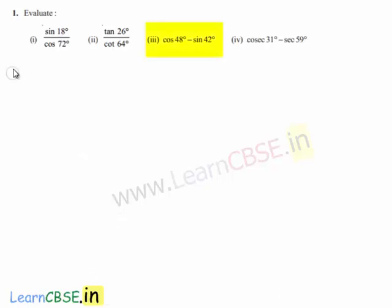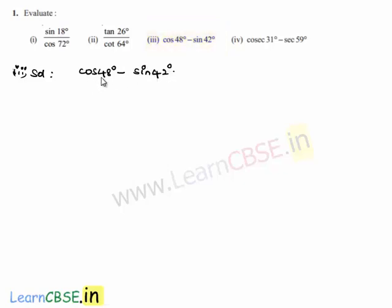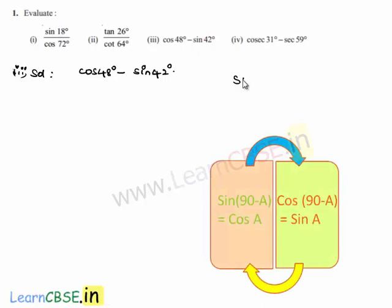Now moving on to the solution for the third bit. The given expression is cos 48 degrees minus sin 42 degrees. Here one term is in terms of cos and the other term is in terms of sin. So let us convert this into a similar trigonometric ratio — either sin or cos — using the formulas: sin of 90 degrees minus A is equal to cos A, or cos of 90 degrees minus A is equal to sin A.